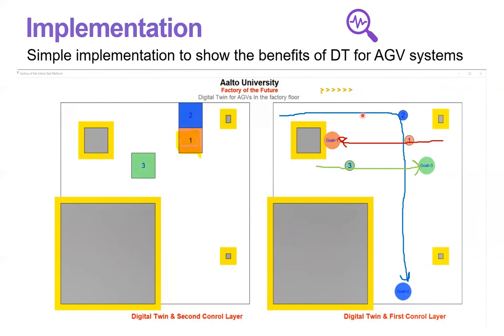You can see the AGV number two stopped before the collision area. And AGV number one is passing the collision area.